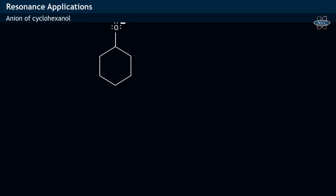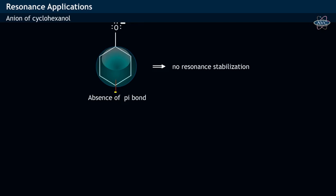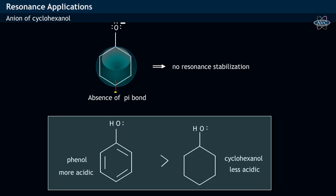Whereas in the case of the anion of cyclohexanol, due to the absence of pi bond, there exists no resonance stabilization in the conjugate base. Therefore, phenol is more acidic compared to cyclohexanol.